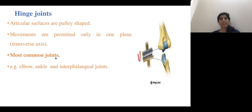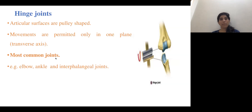The hinge joint — with the elbow joint as a classic example — has pulley-shaped articulating surfaces and permits movement in only one plane. The elbow, ankle, and interphalangeal joints are examples of this type.